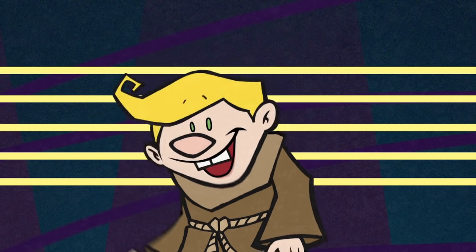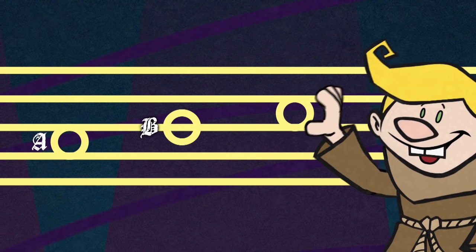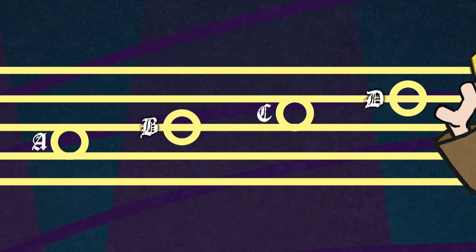I'm going to give the circles letter names. You can be A, and you can be B, oh, and you can be C, oh, and you're definitely a D.